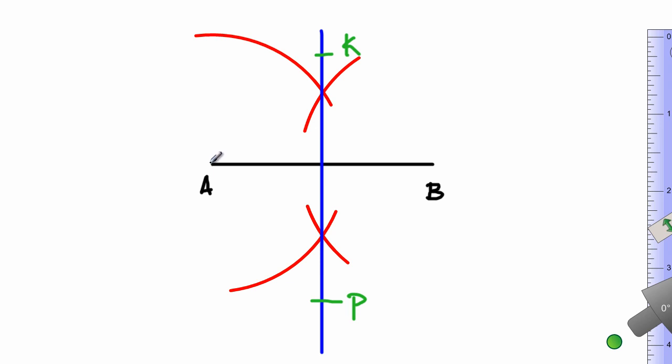Now if you should use your ruler and measure the distance from A to where the blue line is, you should get the same distance as from the blue line to the point B. So you can just go ahead and measure it with your ruler for practice.